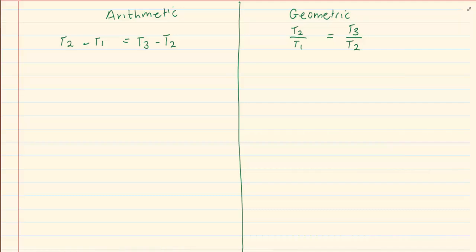A very common error is when you are doing a sum in arithmetic and in the equation they give you unknowns. Let's take the following number pattern: 3x minus 1, 2x plus 3, and 2x minus 1.